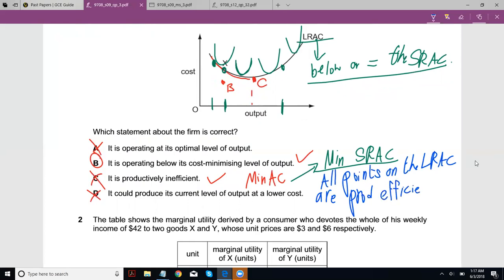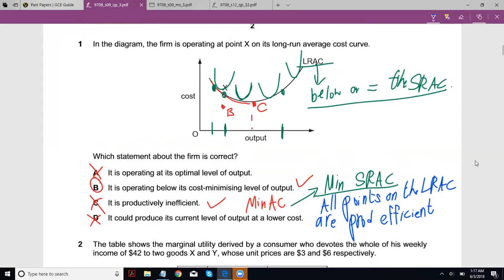So, X is in fact, so if I can just clear up what I just drew here. So, X is not productively inefficient. It is in fact productively efficient. If it has been something like this, this could have been productively inefficient because you're producing that particular output. And you're not producing that output at the minimum possible cost. However, X is showing the minimum possible cost for that particular output and hence all points on the LRAC are productively efficient.